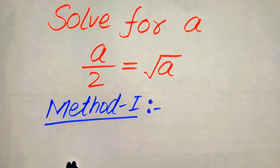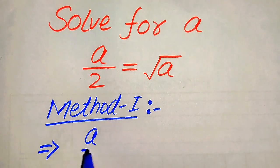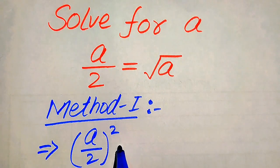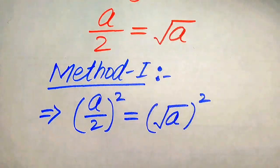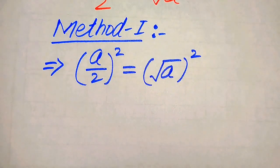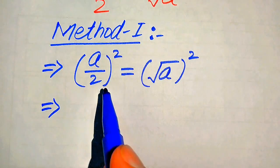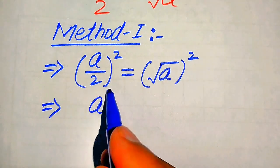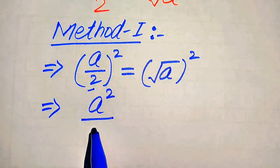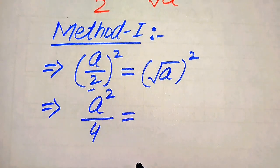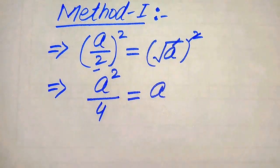In the first method, we need to eliminate the square root sign from the right-hand side. For this, we take squaring on both sides of the given equation. It becomes (a/2)² equals (√a)². We apply the square on the fraction — a² on top, and 2² equals 4 on the bottom. On the right side, the square and square root cancel, leaving just a.